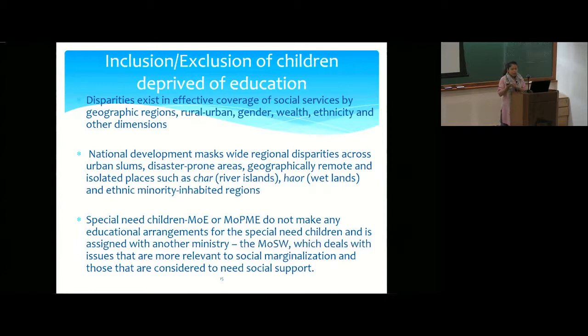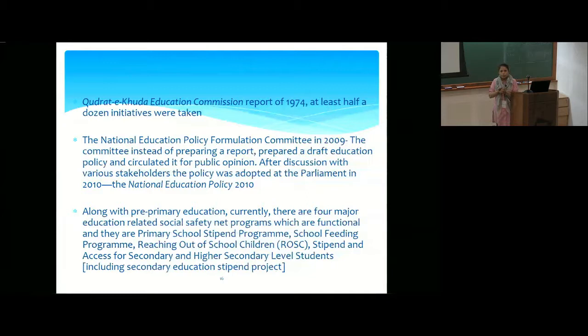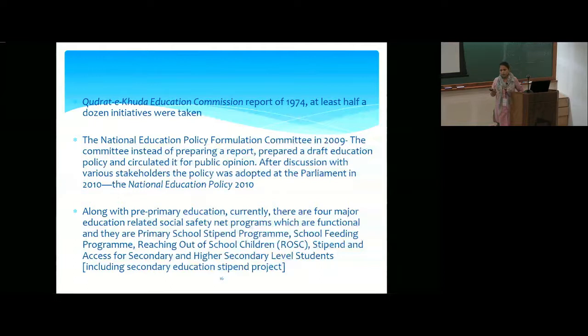National development figures mask regional disparities across urban slums, disaster-prone areas, and geographically remote and isolated places such as river islands and wetlands. For the very first time in 2010, Bangladesh developed a National Education Policy. Prior to that, many commission reports existed but none came to implementation due to political tensions between secular and religious ideologies. The 2010 policy lays out many directives, but these are yet to be implemented — for instance, it calls for compulsory elementary education until grade eight, but compulsory education still only covers grade five.